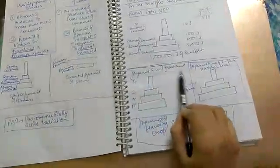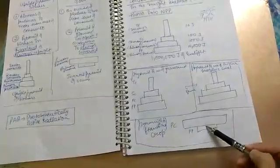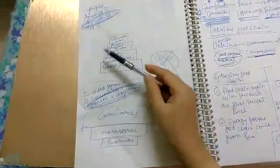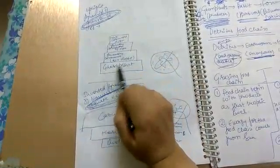Then, pyramid of numbers in grasslands is upright, also upright at trophic levels. Pyramid of standing crop is inverted. In upright pyramid, top carnivores are at top, then primary carnivores, then primary consumers, and grass plants at the base. In inverted biomass pyramid, the structure is reversed.